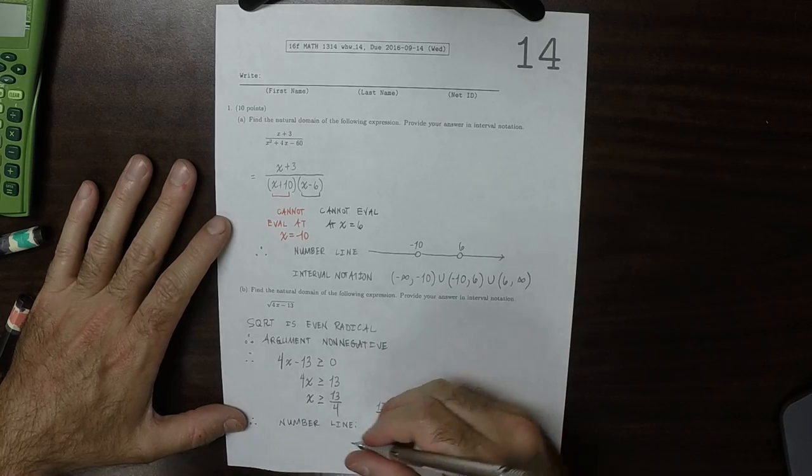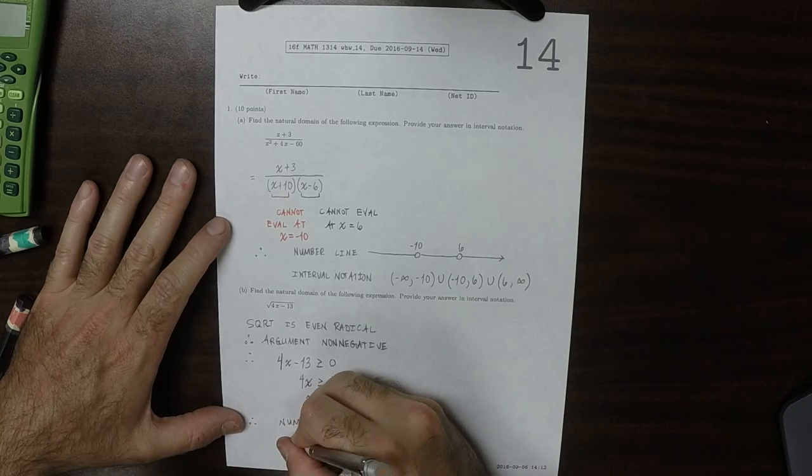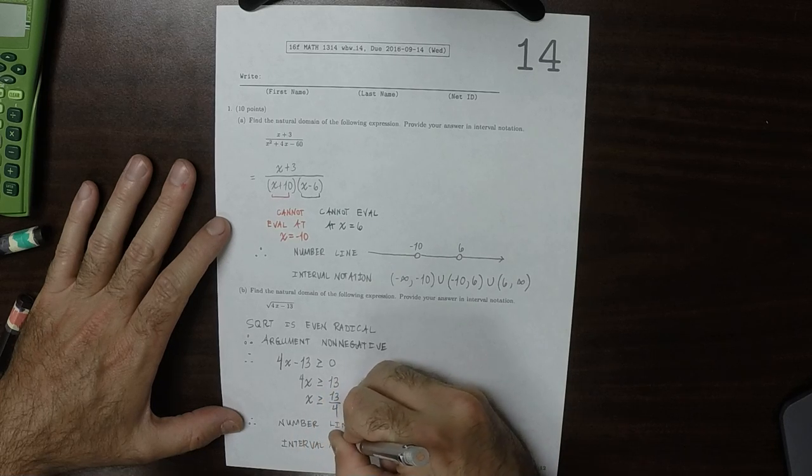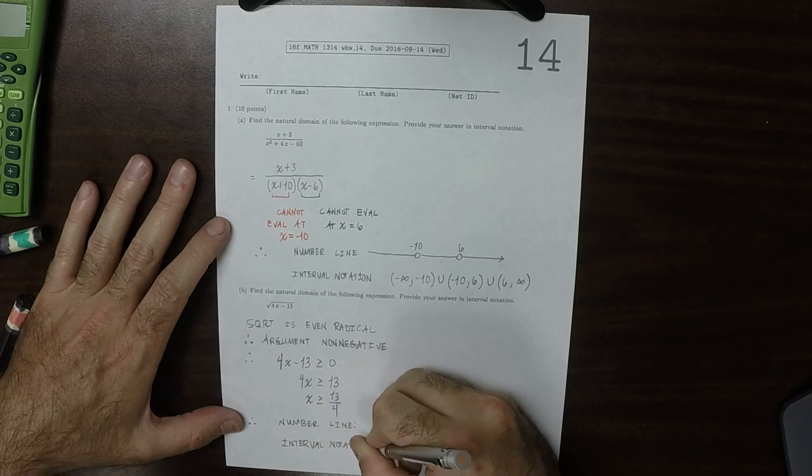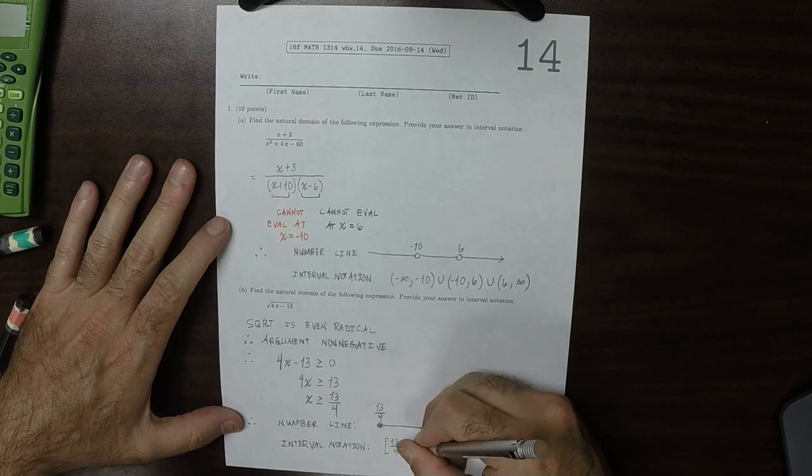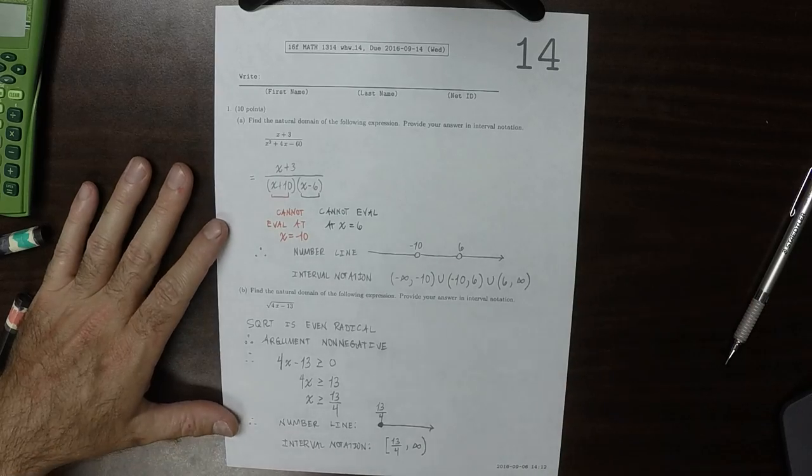In interval notation, that would be 13 over 4 to infinity.